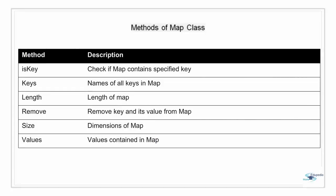Methods of the map class: shown here is the list of methods available for a map object. First is the isKey method, which checks whether the map contains a specified key or not. Then we have the keys method that returns the names of all the keys in the map. Then the length method outputs the length of the map, which is the count value. The remove method removes a key and its associated value. The size method shows the dimension of the map, and the values method returns all the values contained in the map.